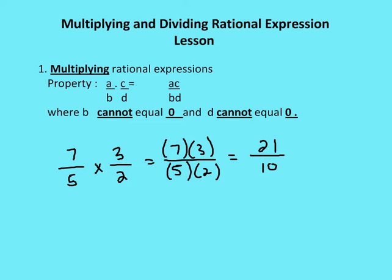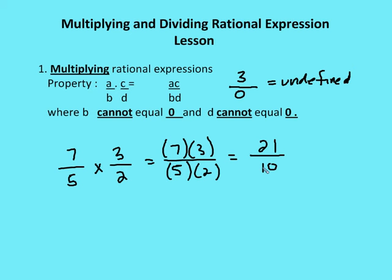b and d can't equal 0 because if either is 0, then b times d equals 0. We've talked about the fact that dividing by 0 is undefined in math. So we don't want a denominator with a value of 0. For example, 7 over 5 times 3 over 2 equals 7 times 3 over 5 times 2, which equals 21 over 10.